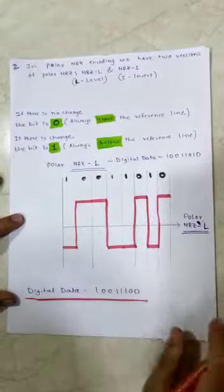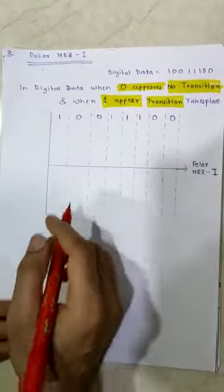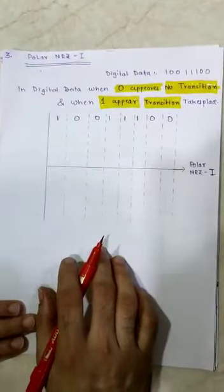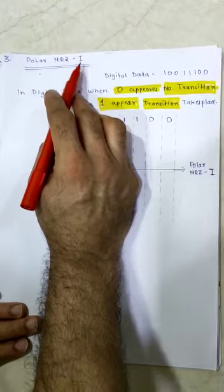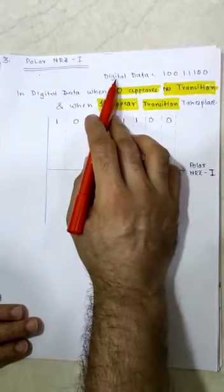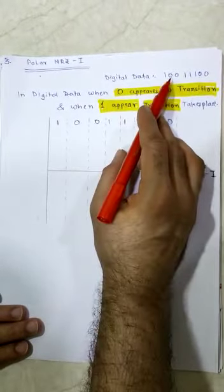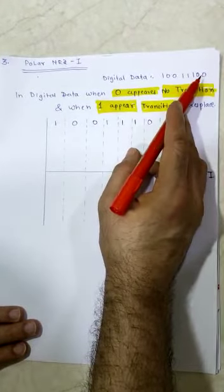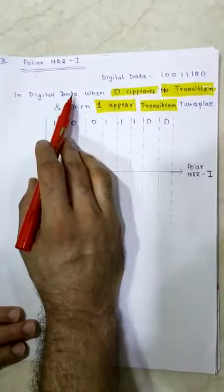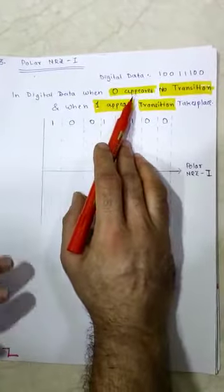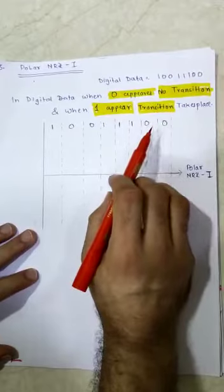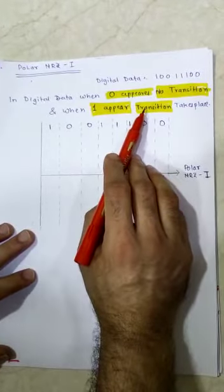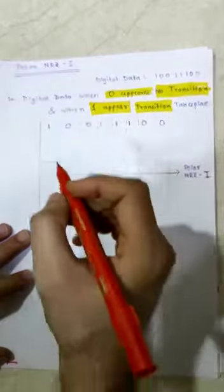Now we start with polar NRZ-I. The digital data provided is: 1 0 0 1 1 1 0 0. In NRZ-I, when zero appears there is no transition, and when one appears a transition takes place. The meaning of transition is that the line code will change its direction.